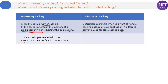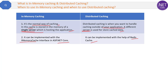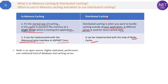In-memory caching can be implemented with the help of the IMemoryCache interface in ASP.NET Core, whereas distributed caching can be implemented with the help of Redis cache. We won't go into the implementation details here as that would be a very long discussion, but at a higher level: IMemoryCache interface helps implement in-memory cache, and Redis cache helps implement distributed caching in ASP.NET Core.